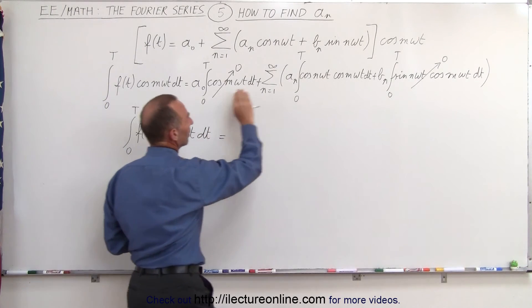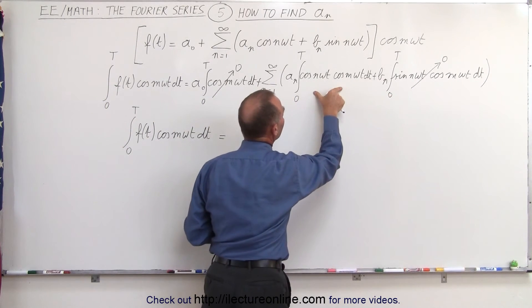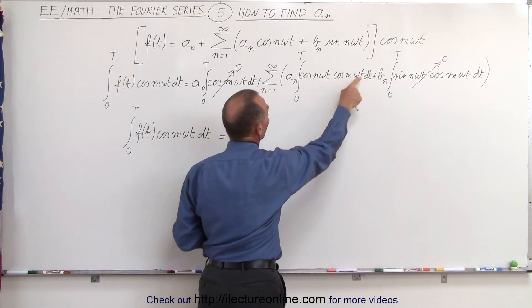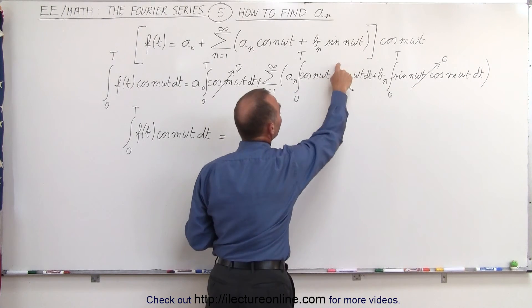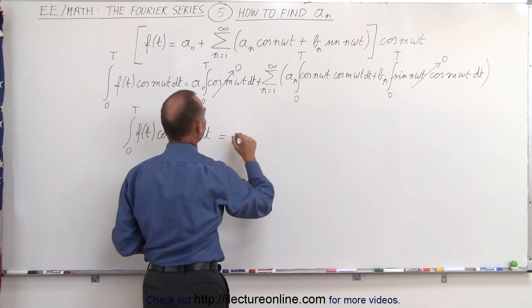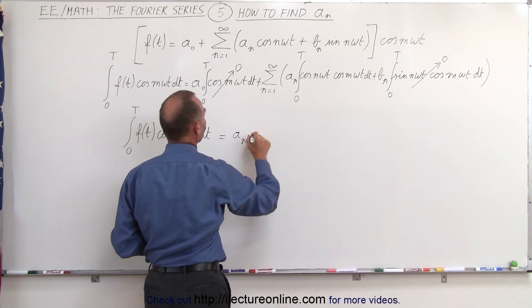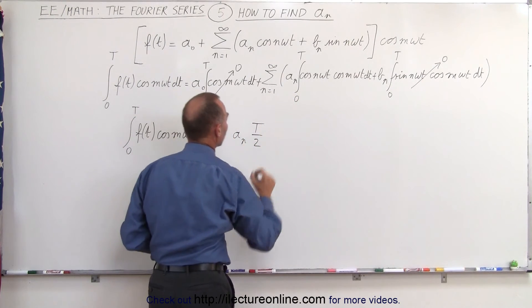the integral from 0 to t of f of t times the cosine of m omega t dt is equal to, well, this is 0, that's 0, this is the only remaining term. We're no longer going to need this because this will now turn into t over 2, and that means we have equal to a sub n times t over 2.